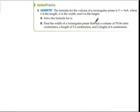So let's take a look at this geometry problem. The formula for the volume of a rectangular prism is V equals LWH, where L is the length, W is the width, and H is the height. Solve the formula for W. So first things first. Solve the formula for W. V equals LWH. If I divide both sides by LH, I get V over LH equals W. Divide both sides by LH, excuse me.